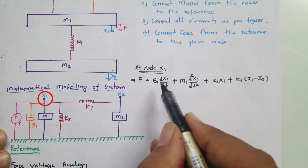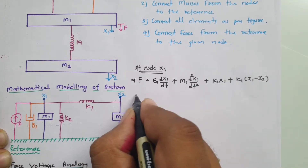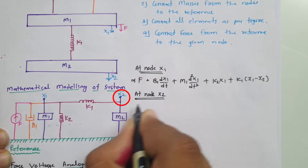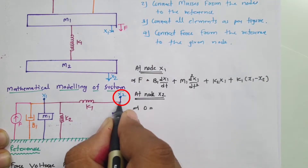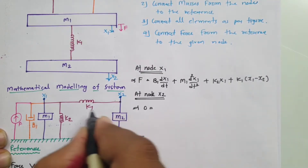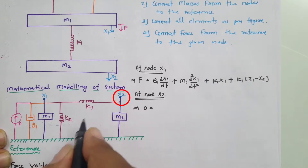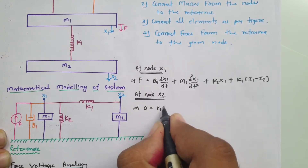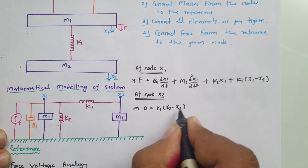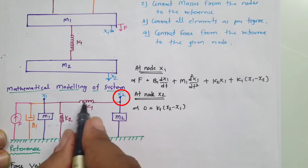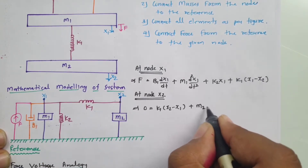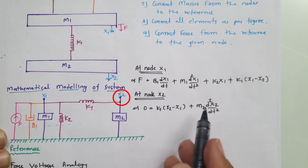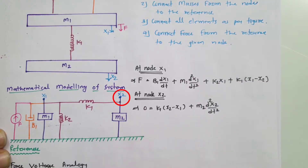That is the first equation. The second equation is at node x2. The incoming force at node x2 is zero, and that equals the outgoing force in k1 and m2: 0 = k1(x2 - x1) + m2(d²x2/dt²).